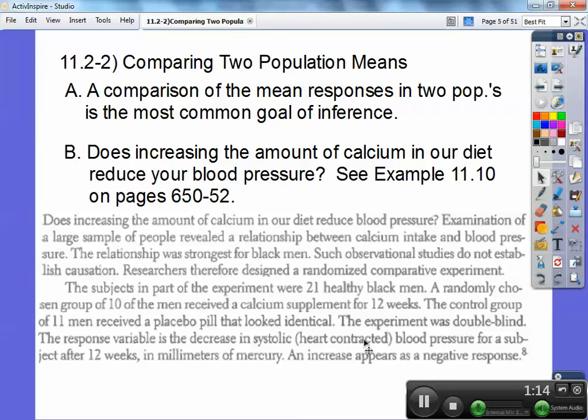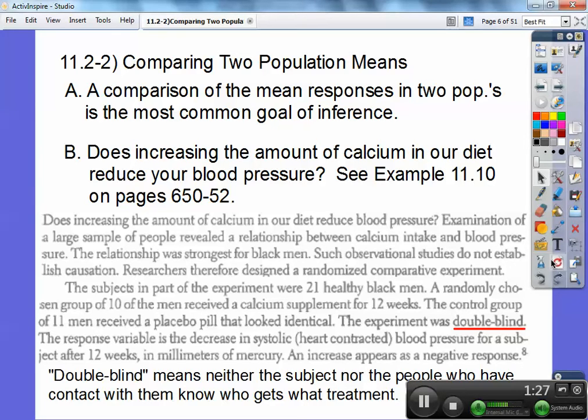The response variable is the decreased systolic blood pressure for a subject after 12 weeks in millimeters of mercury. So an increase will appear as a negative response. And there's what double blind is right there.